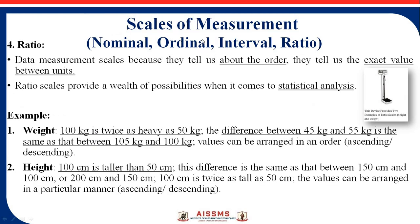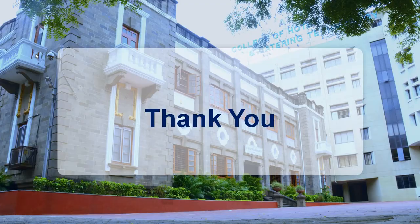The last scale of measurement is ratio. Ratio data tells us about the order and the exact value between units. For example, weight and height — height and weight are dependent on each other. The ratio scale provides a wealth of possibilities and comes under statistical analysis. Ratio is generally used in mathematical and statistical analysis. Weight and height are the best examples of ratio. This is all about types of data and types of scales of measurement, which are generally used in machine learning.